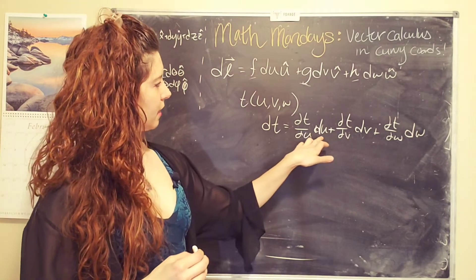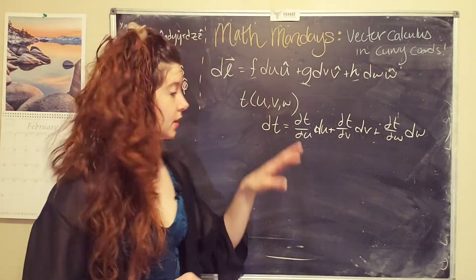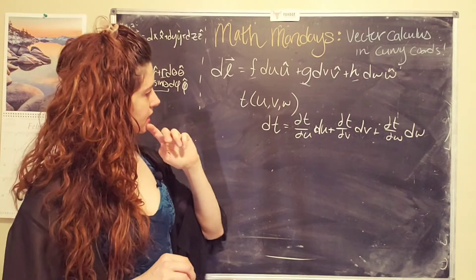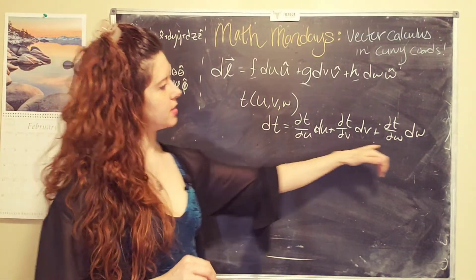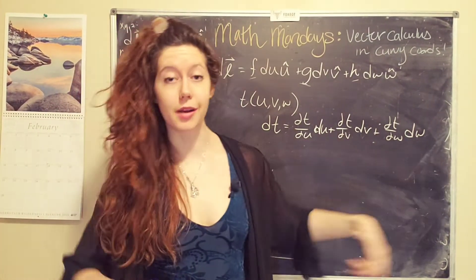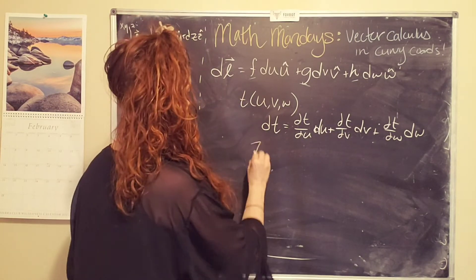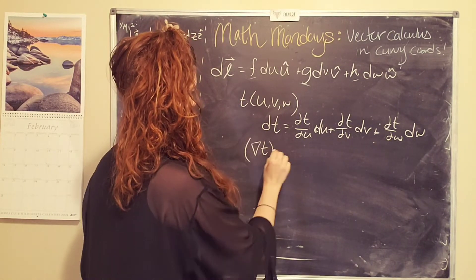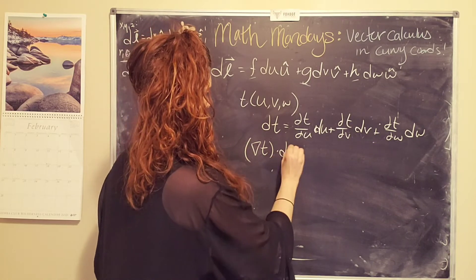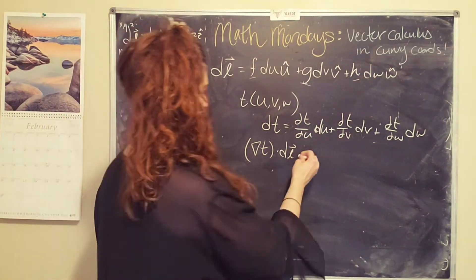And I'm like, okay, well, this is going to be a little hard to figure out. So what I can do is I can say, hey, wait a second, this kind of looks like a dot product between del t dot my infinitesimal displacement vector, dl.